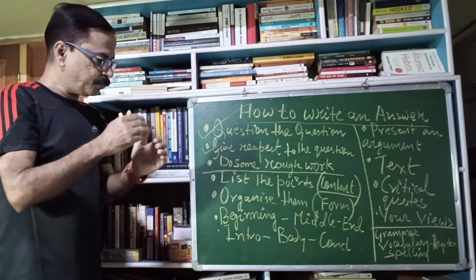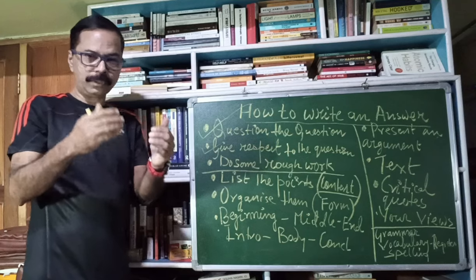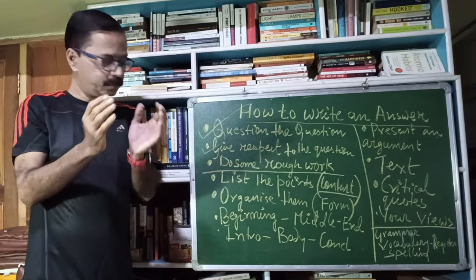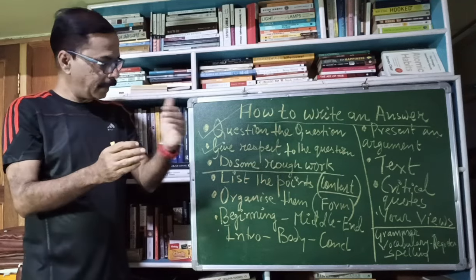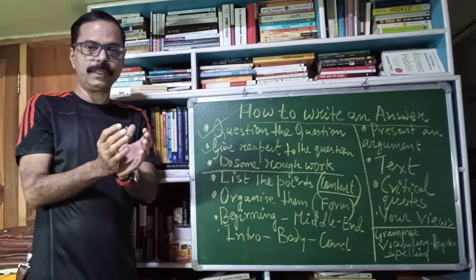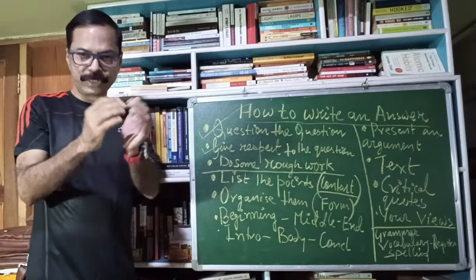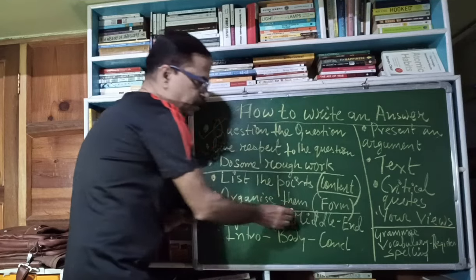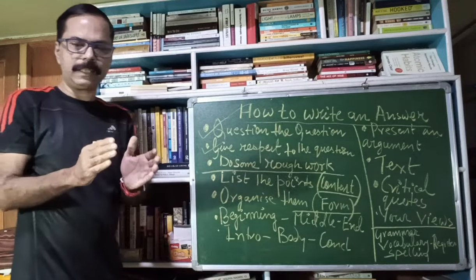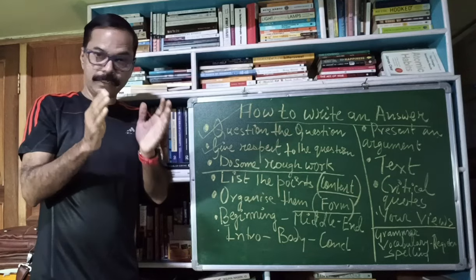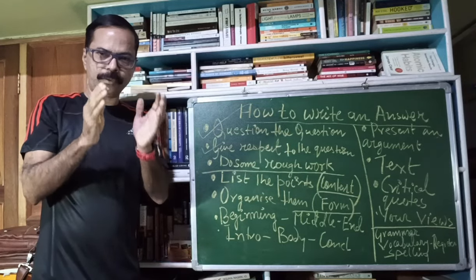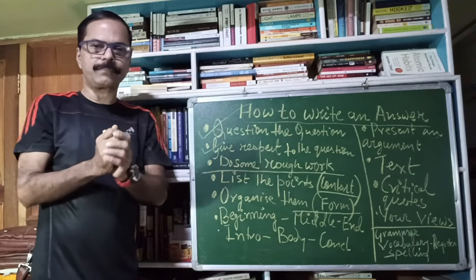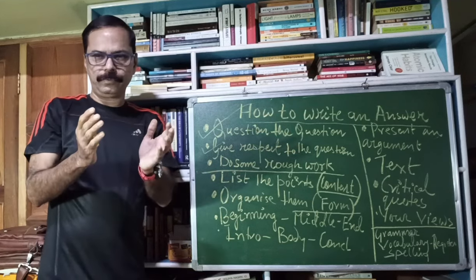Now those points need to be organized, because the points will not come to you in a particular pattern. They will come at random. So list them randomly. The next stage, what you do is you organize the points into a perfect whole. Give shape to it. So give a form to it. So content and form. Your answer requires both content and form. That means it has to have substance. Your answer should be precise. It should have good matter. And it should also be placed in a particular shape to be impressive.